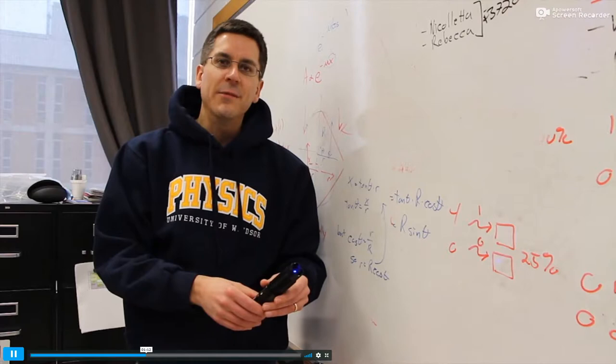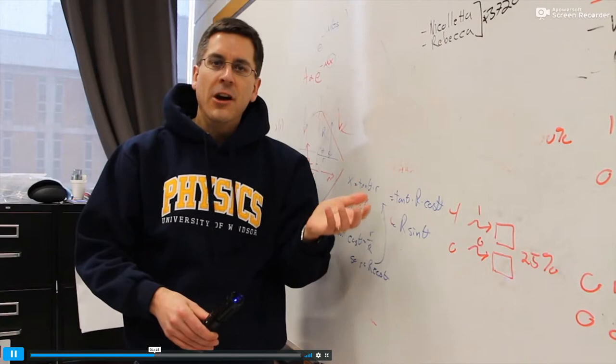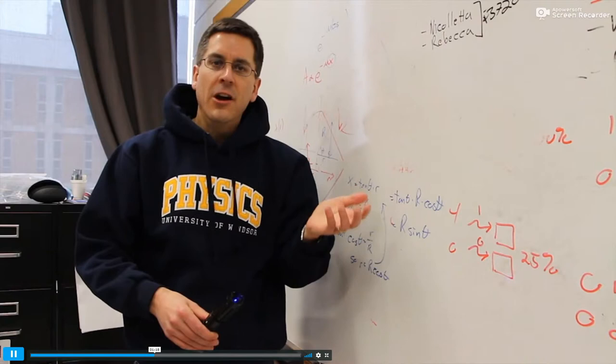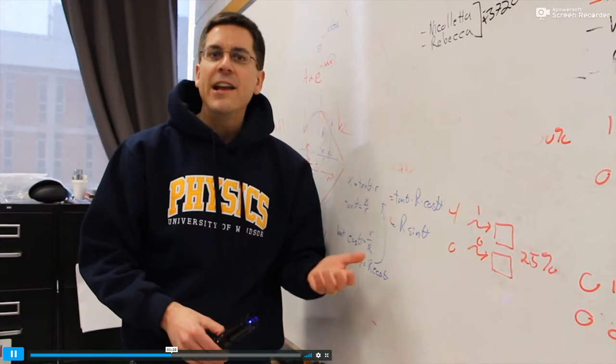Light does two things which tells me that a lightsaber is probably not possible. One, light will never stop at the end of a sword. One thing we know about light that is an immutable law of physics is that light must travel at the speed of light, 300,000 kilometers per second. It cannot stop.